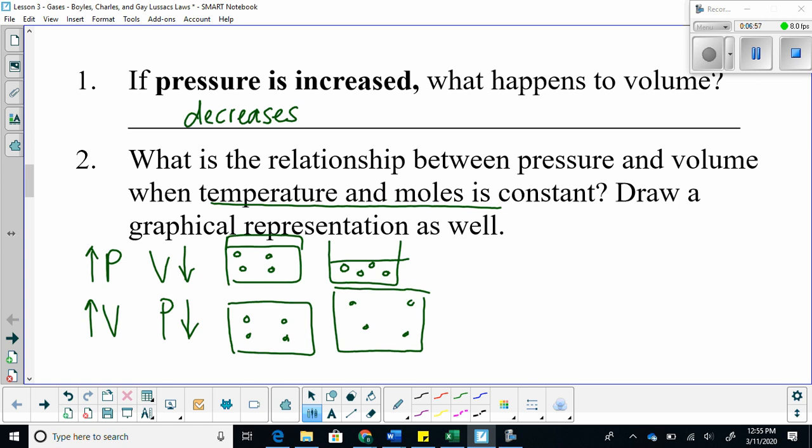This is another way for us to represent this relationship. So we can say pressure is inversely proportional to volume. This symbol here means proportional. Because I put one over volume, that means it's inversely proportional. Same thing here: volume is inversely proportional to pressure.